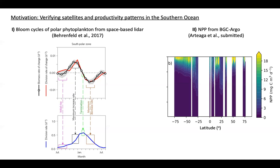The second study is more directly focused on the estimation and validation of vertically resolved primary production estimates using the floats. The idea is to take advantage of the vertically resolved phytoplankton biomass information from the floats — information that is normally difficult to get from satellites — and by combining that with satellite information, we might be able to start having a three-dimensional view of primary production in the global ocean.